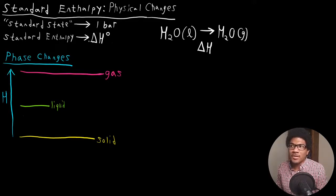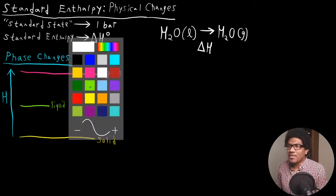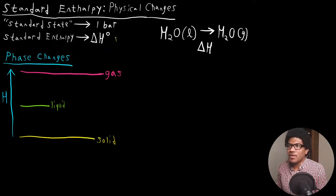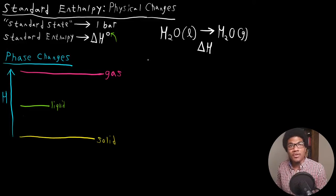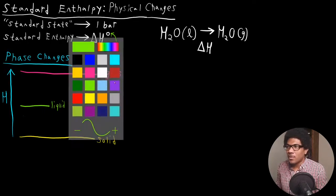Notationally, when we're talking about a standard enthalpy, we always add this little notation in the superscript. This little circle is always added to denote that this enthalpy was taken at standard state. Obviously, if we just write delta H, we're referring to an enthalpy change. But this superscript, this circle in the superscript, gives us a little bit more specificity telling us that this enthalpy was taken at standard state.